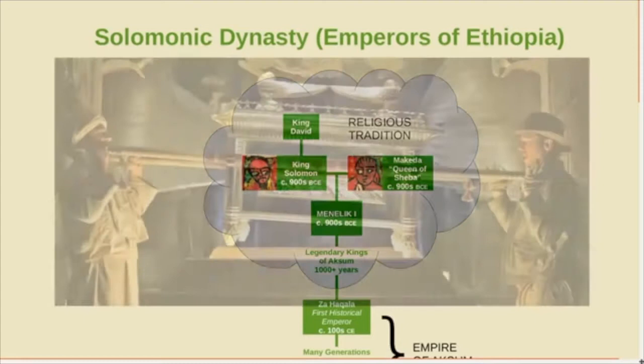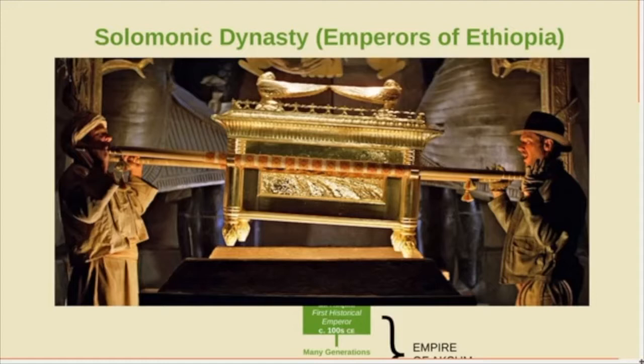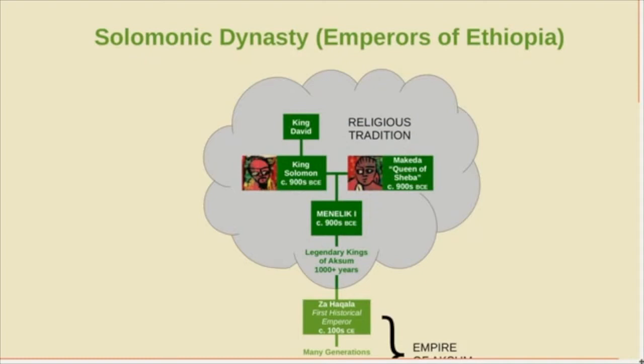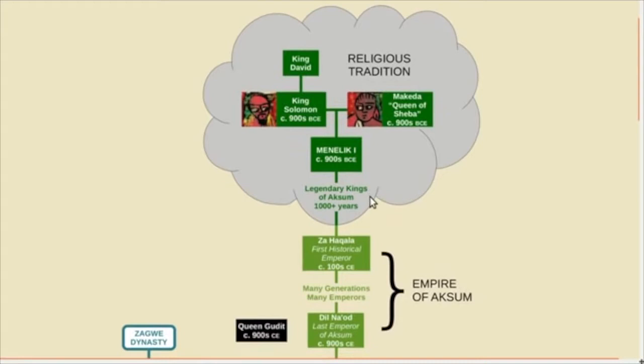The Ark of the Covenant is that golden box featured in the Indiana Jones movie, Raiders of the Lost Ark. It supposedly held the Ten Commandments inside. So if you want to find the Lost Ark, you might want to start in Ethiopia. But let's get back to the dynasty. In ancient times, Ethiopia was known as the Kingdom of Aksum, and Menelik was supposedly the ancestor of their kings.